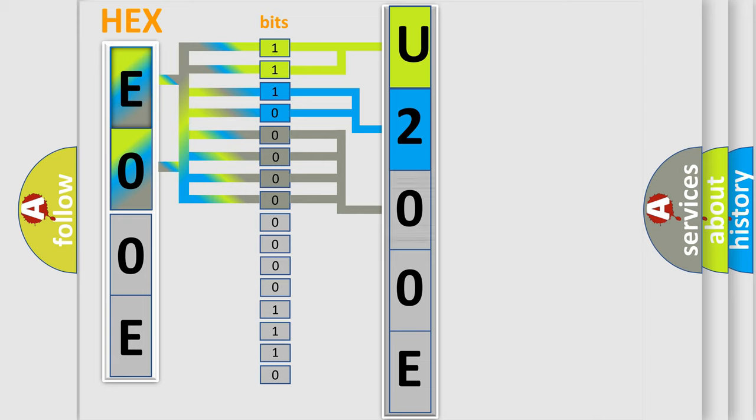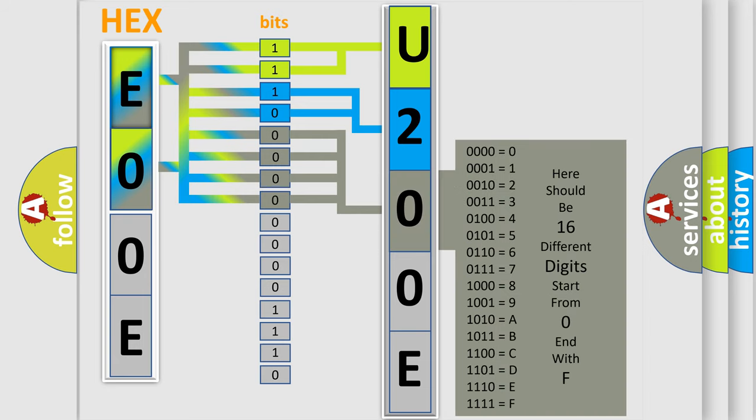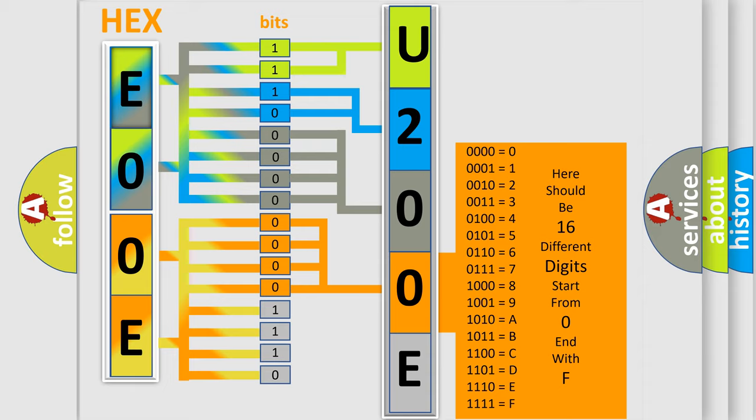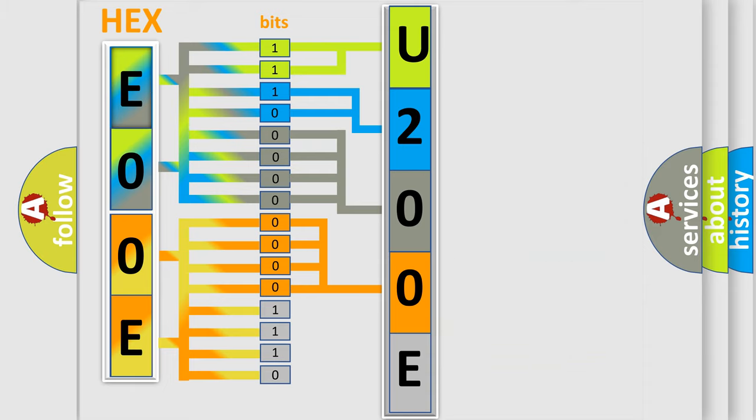The second byte is composed of a combination of eight bits. The first four bits determine the fourth character of the code, and the combination of the last four bits defines the fifth character. A single byte conceals 256 possible combinations.